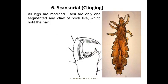The next is the scansorial type of legs, modified for clinging purpose. All legs are modified for clinging. The tarsus is only one-segmented and the claw is hoop-like, which holds the hair. This scansorial or clinging type of legs is found in case of head louse.